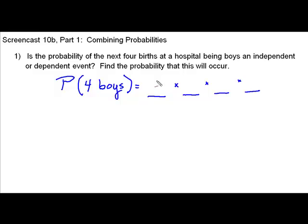Because these are independent events, we forget about the first birth when we are computing the second birth. In this particular case, the probability that the second birth will be a boy also would be one half, and the same thing happens for the third and the fourth birth.